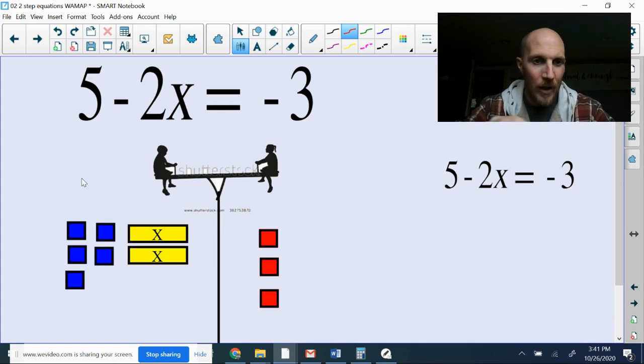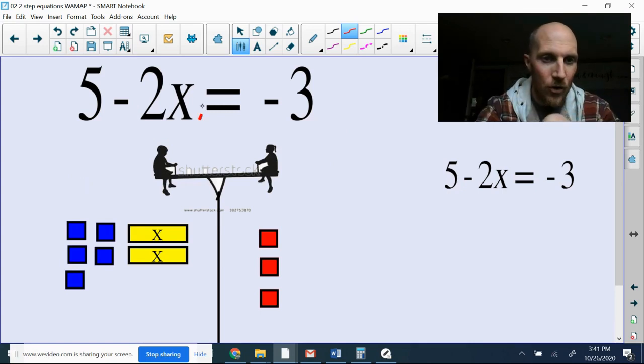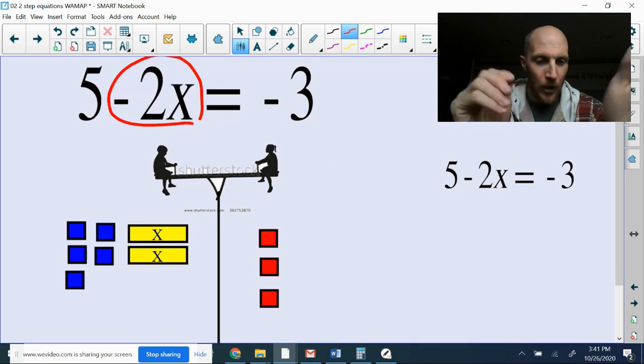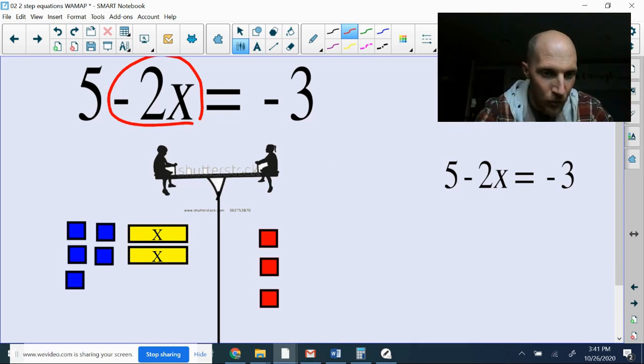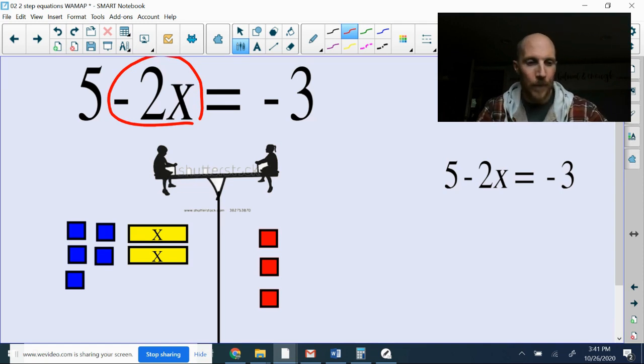Because the minus sign is actually attached to the 2. And with the algebra tiles, we can see that we've got those two negative x's. It is a negative 2x. The 5 is not negative in any way. I have five positive blue blocks there. Okay. So if I'm going to try to get the x by itself on one side of the teeter-totter, I need to get rid of those five blue blocks. The way I do that is by subtracting the 5.